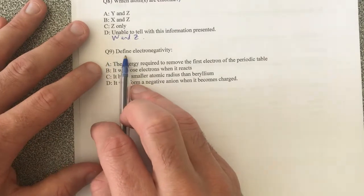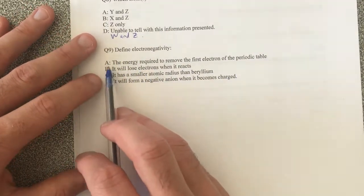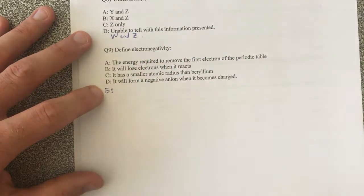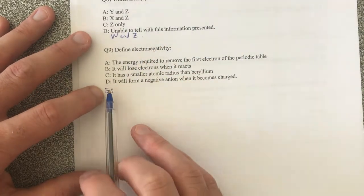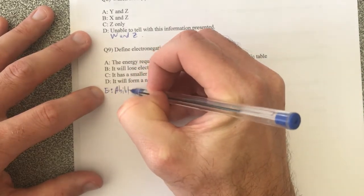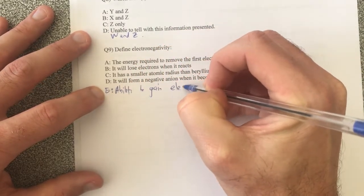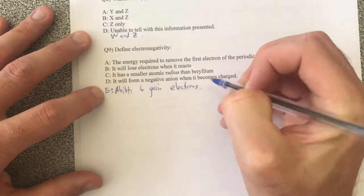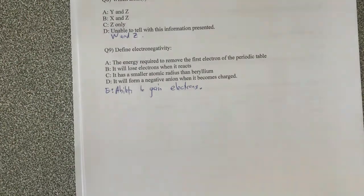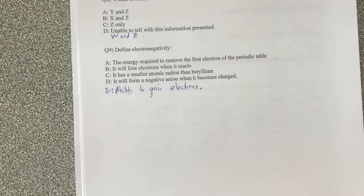Lastly, define electronegativity. And from memory, I stuffed up this question and there is no right answer. So if we go with just E, we'll say the fact that electronegativity is the ability to gain electrons. So the ability to gain electrons. And this is poor form on me for not having the correct answer there. But that's our multiple choice done and dusted. Let's look at our short answer next.